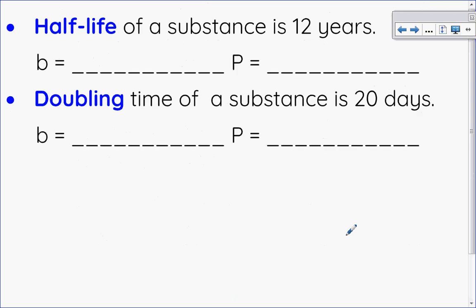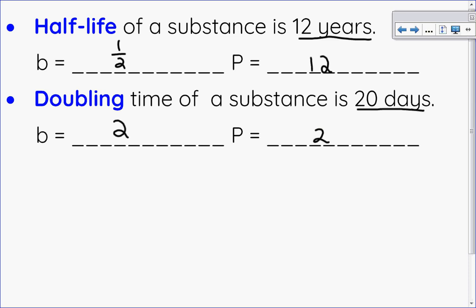Two more examples: half-life means the amount is cut in half, and the definition of half-life is the time it takes to get cut in half — in this case 12 years, which is the period. Doubling time means the amount multiplies by two, and that is the time it takes an amount to double in quantity — in this case 20 days, which is the period.